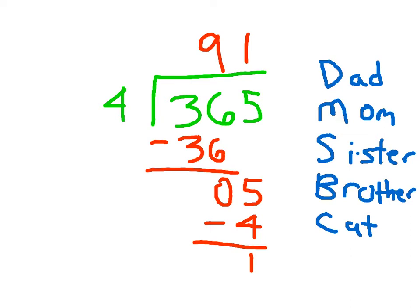The mom says 9 times 4 is 36. Sister turns around — we subtract: 36 minus 36 is 0. Brother says to bring down, so we bring down that 5. After we bring down, we go back to that dividing step again. We take 5 and divide it into 4 parts, which is 1.